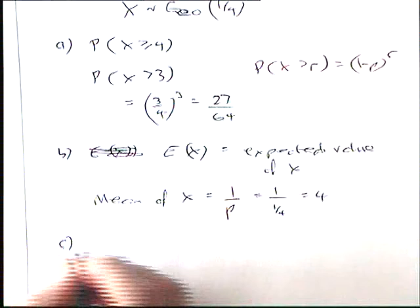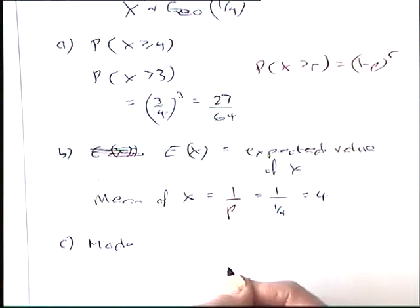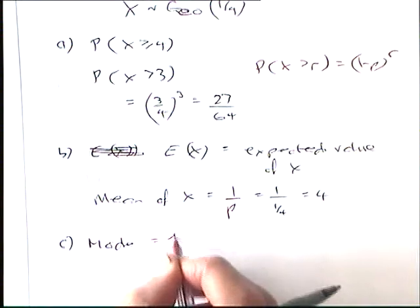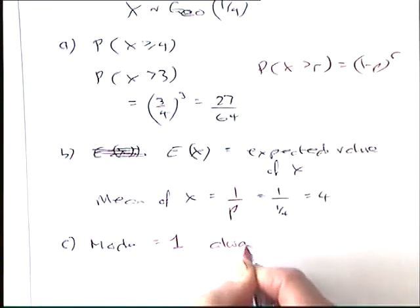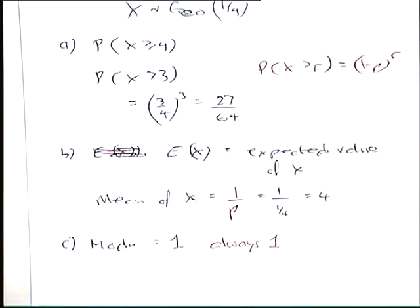Part C. State. If there's a clue in the word state, you haven't got to do much work. State the mode of X. 1. Because it's always 1. For a geometric. The mode is always 1. We had that earlier on.